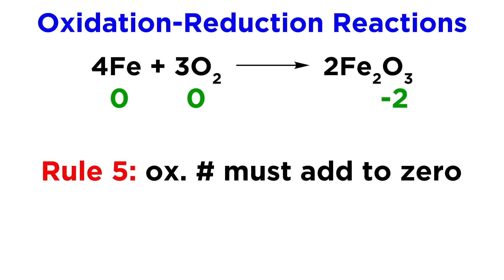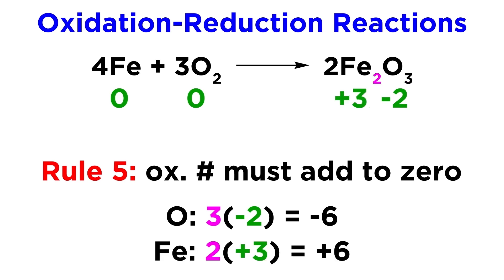Then this compound must have numbers that add up to zero. There are three oxygens, so that adds up to minus six. And there are two irons, so they must each be plus three, which makes sense as that is the oxidation state of these ions.